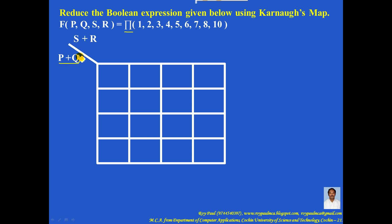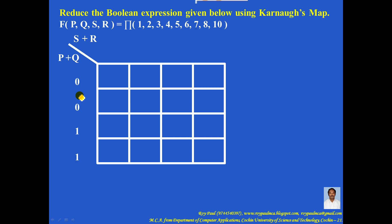P and Q are boolean variables. They can take either 0 or 1. So write all the combinations of 0s and 1s so that you get grey code. It can be written as 00, 01, and on the right-hand side 0, 1, then from bottom to top 0, 1. The combination 0, 0, 0, 1, 1, 1, 1, 0 is known as grey code.